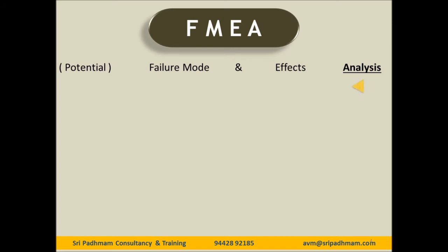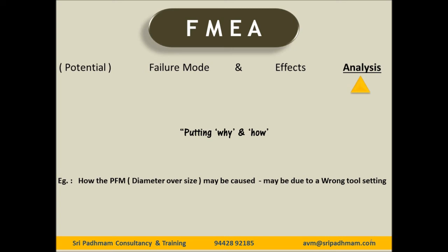Finally, 'analysis' — how to understand this word. The simple understanding is putting 'why' and 'how.' If you keep putting why and how, that means we are doing an analysis. FMEA, being a proactive tool, must focus on how a particular failure mode may occur — the potential causes, not just causes. For example, how the PFM — diameter oversize — may be caused: it may be due to a wrong tool setting. The wrong tool setting is the potential cause for a particular potential failure mode. Every keyword — potential — echoes.